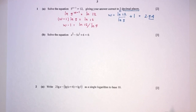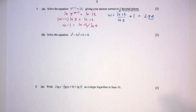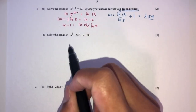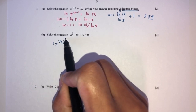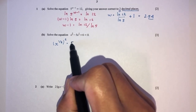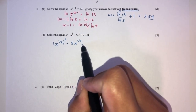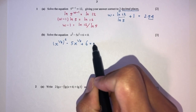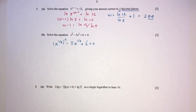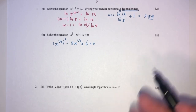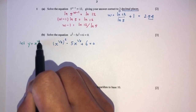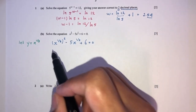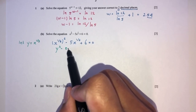For part B, we have to solve the equation. We can rewrite it as x to the power 1/3, squared, minus 5 times x to the power 1/3, plus 6. We use a substitution: let y equal x to the power 1/3. This becomes y squared minus 5y plus 6, a simple quadratic equation.